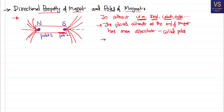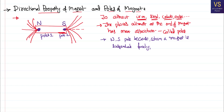We name them as north pole and south pole because a magnet has a directional property. When a magnet is suspended freely on the surface of the earth, these poles show directions — one pole shows north direction and the other pole shows south direction. So the pole which shows the north direction is called the north pole, and the pole which shows the south direction is called the south pole.